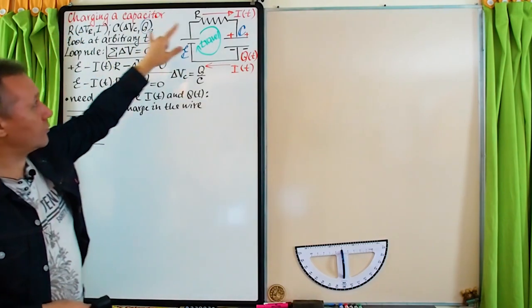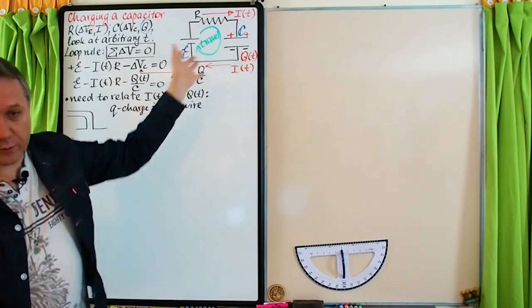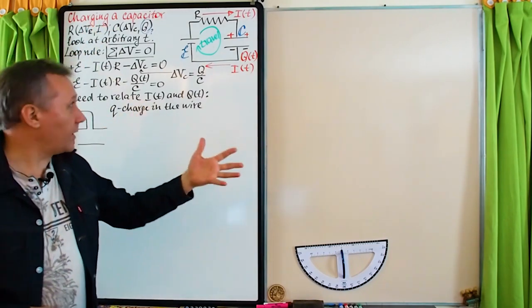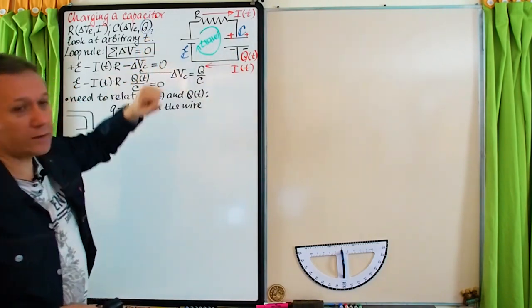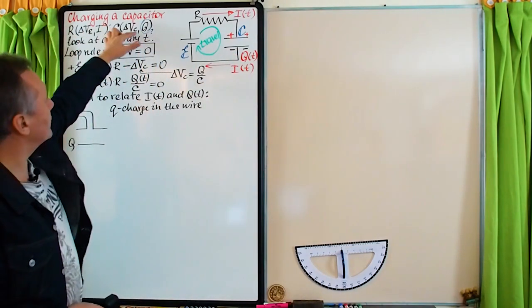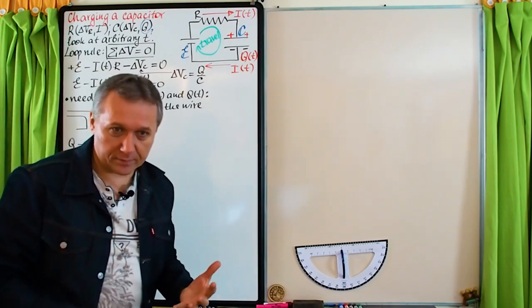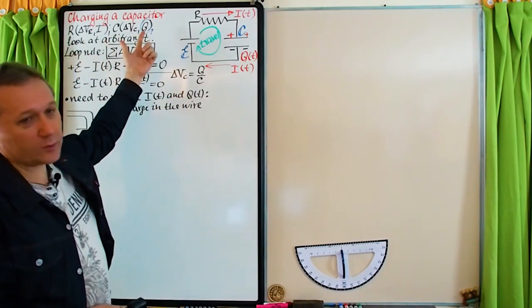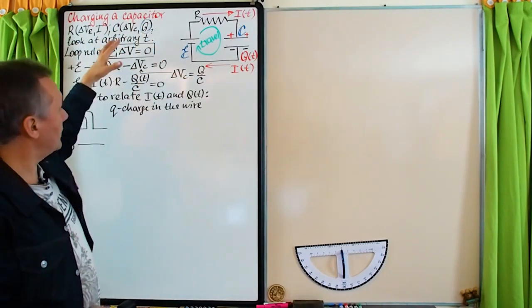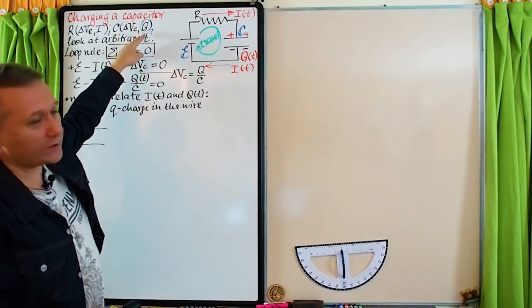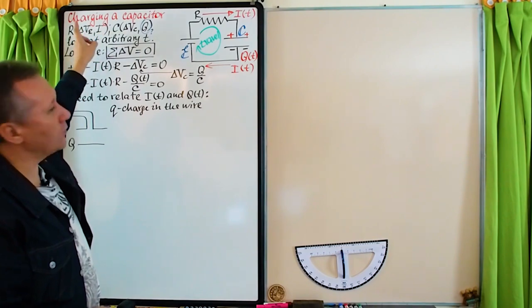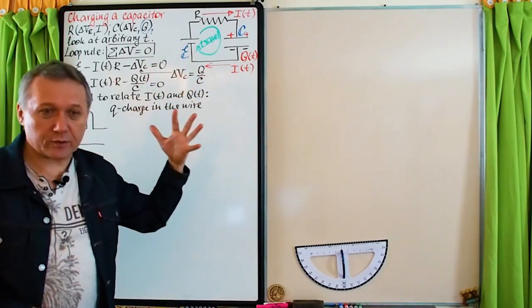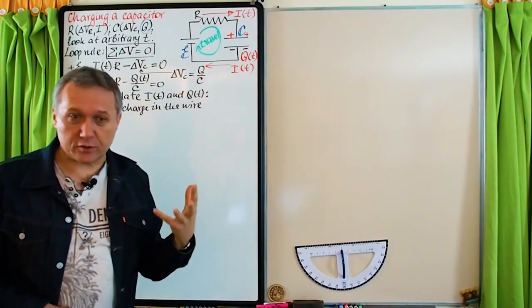We want to analyze the circuit. Analyzing means knowing the potential difference across the resistor, current in the resistor, and all parameters about the capacitor — potential difference across it and charge inside. All four parameters are functions of time, and they are all related. If you find any one of these parameters you can find the rest. In this case we will find the charge Q, and then from that you can find everything else.